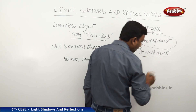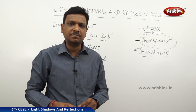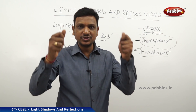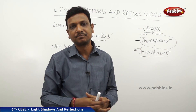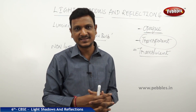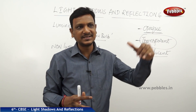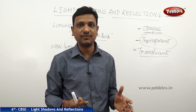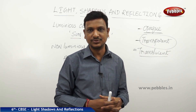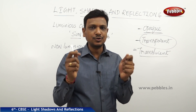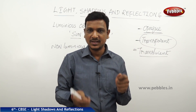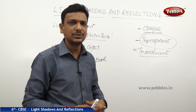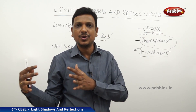Then what is translucent? Translucent means when an object or material allows light to pass through it only partially — not completely. For example, butter paper: you can see the other side through it, but not clearly. Smoked glass or decorative glass used in some windows gives only a blurry outline of what is on the other side — that is translucent. You can make a translucent object yourself: take a plain paper — you cannot see through it — but if you apply some oil, the paper becomes translucent and you can see the other side, though not clearly.